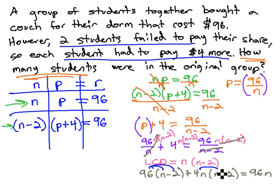Start solving by distributing through the parentheses gives us 96n minus 192 plus 4n squared minus 8n equals 96n.